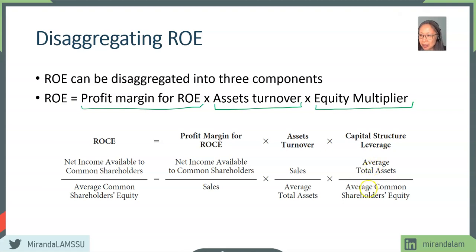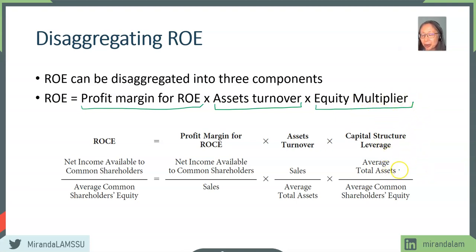We take total assets divided by common stockholder equity. For example, if total assets are 2 and common shareholder equity is 1.5, then for every $1.50 put in as equity, you borrow $0.50 to acquire $2 worth of total assets. That's why the term 'multiplier' is used — equity enables the company to leverage and purchase more total assets, hence capital structure leverage or equity multiplier.